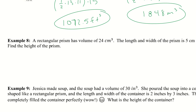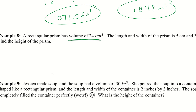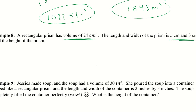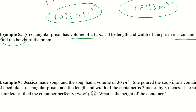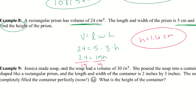Example eight: a rectangular prism has a volume of 24 centimeters cubed, with length 5 centimeters and width 3 centimeters — find the height. Using V = l × w × h: 24 = 5 × 3 × h, so 24 = 15h. Dividing both sides by 15 gives h = 1.6 centimeters. Sometimes we're given the volume and must work backwards.